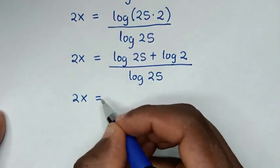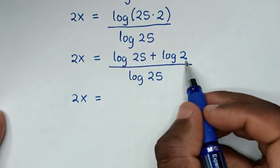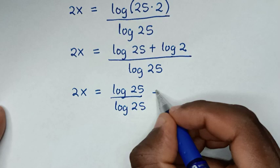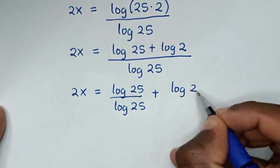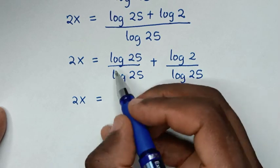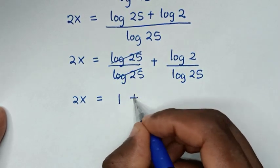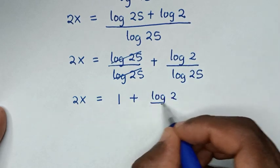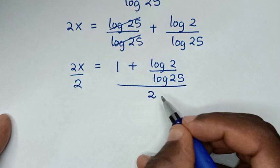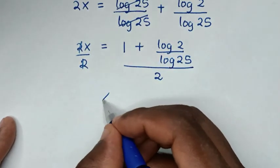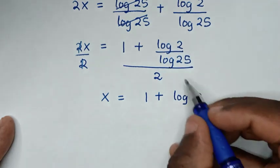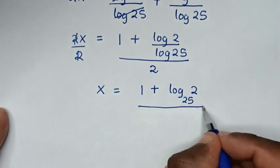Then 2x is equal to log of 25 divided by log of 25, plus log of 2 over log of 25. Simplifying, log 25 over log 25 is 1, so 2x is equal to 1 plus log of 2 over log of 25. To find x we divide both sides by 2, so x is equal to 1 plus log base 25 of 2, all over 2.